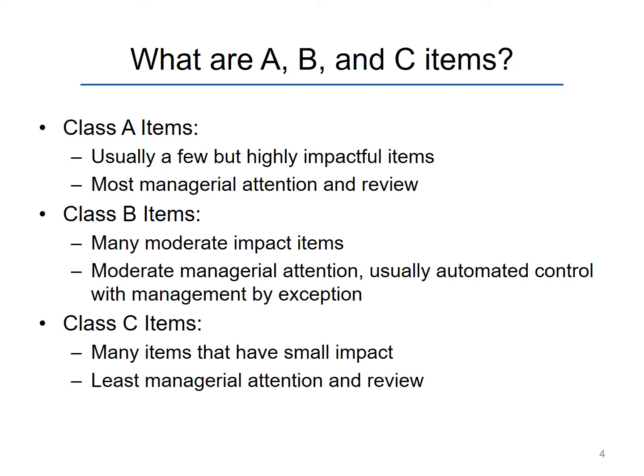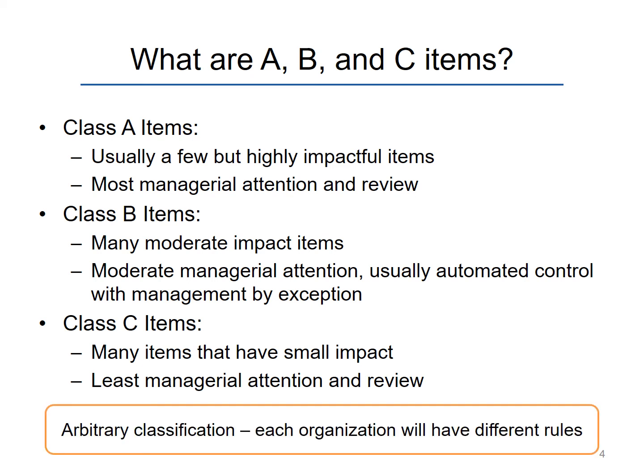There are lots of groupings and categorizing in ABC analysis and it is a very widely used method. One important point is that the classification is rather arbitrary and can vary across different organizations. For example, we can have partial classes like B plus items, C minus items, etc. We can also have additional classes like D, E, F and so on. The grouping and categorization will vary.